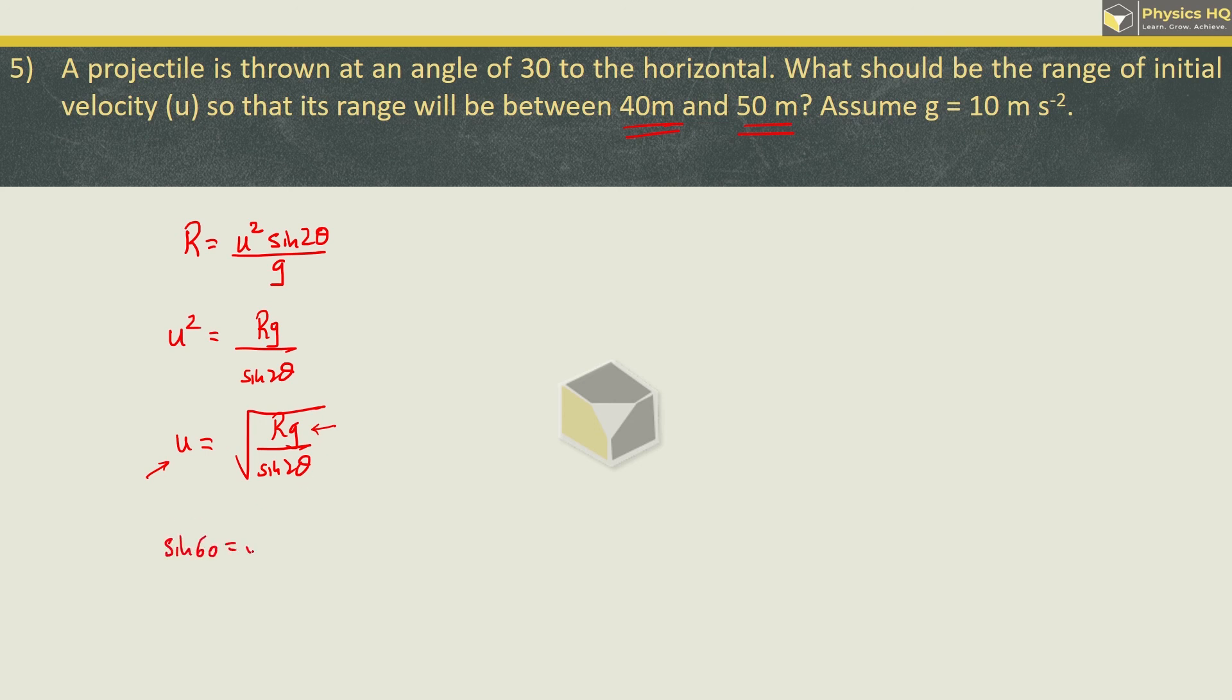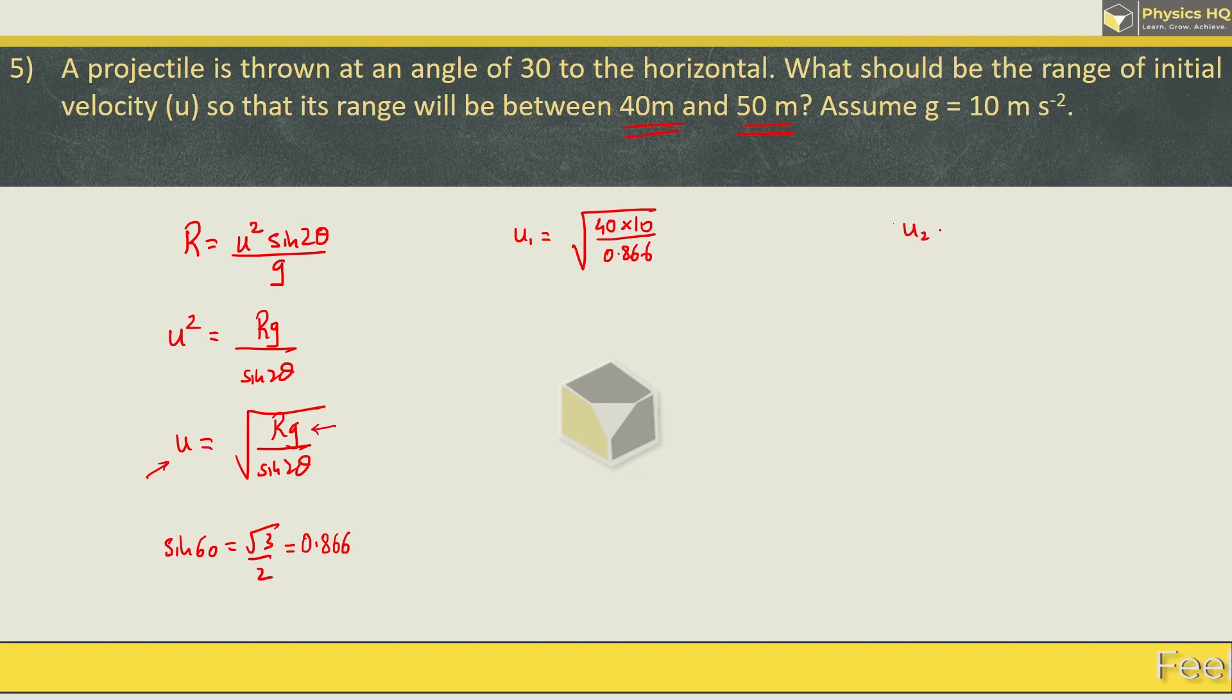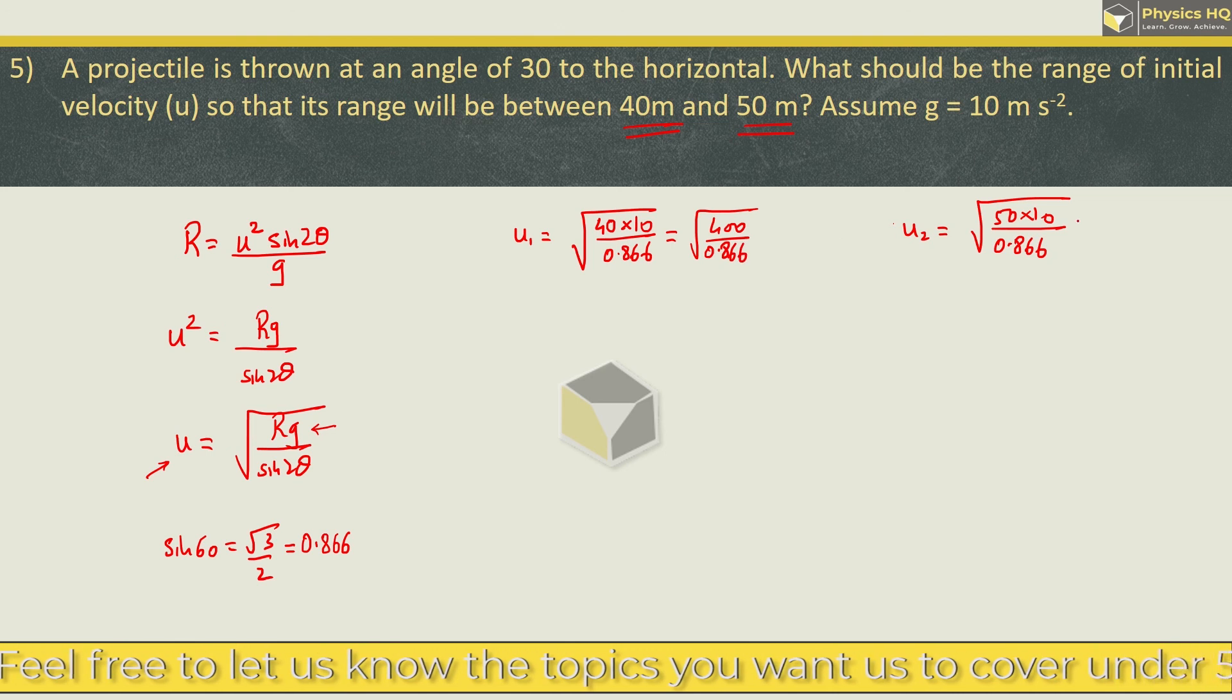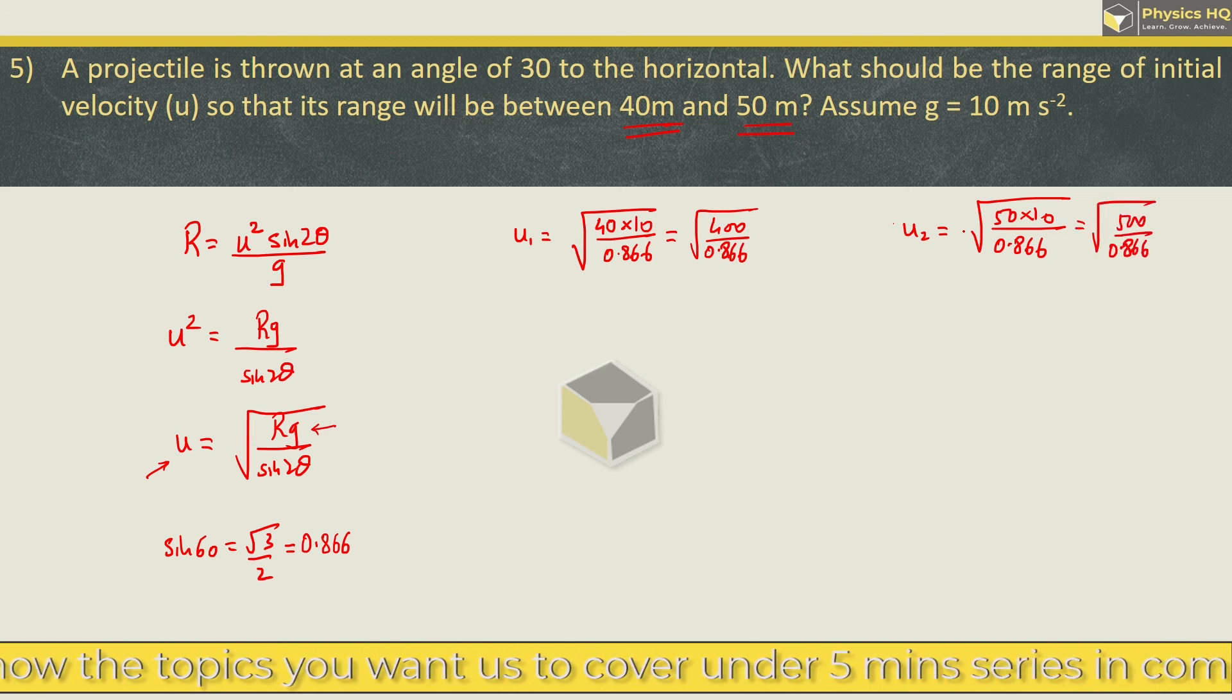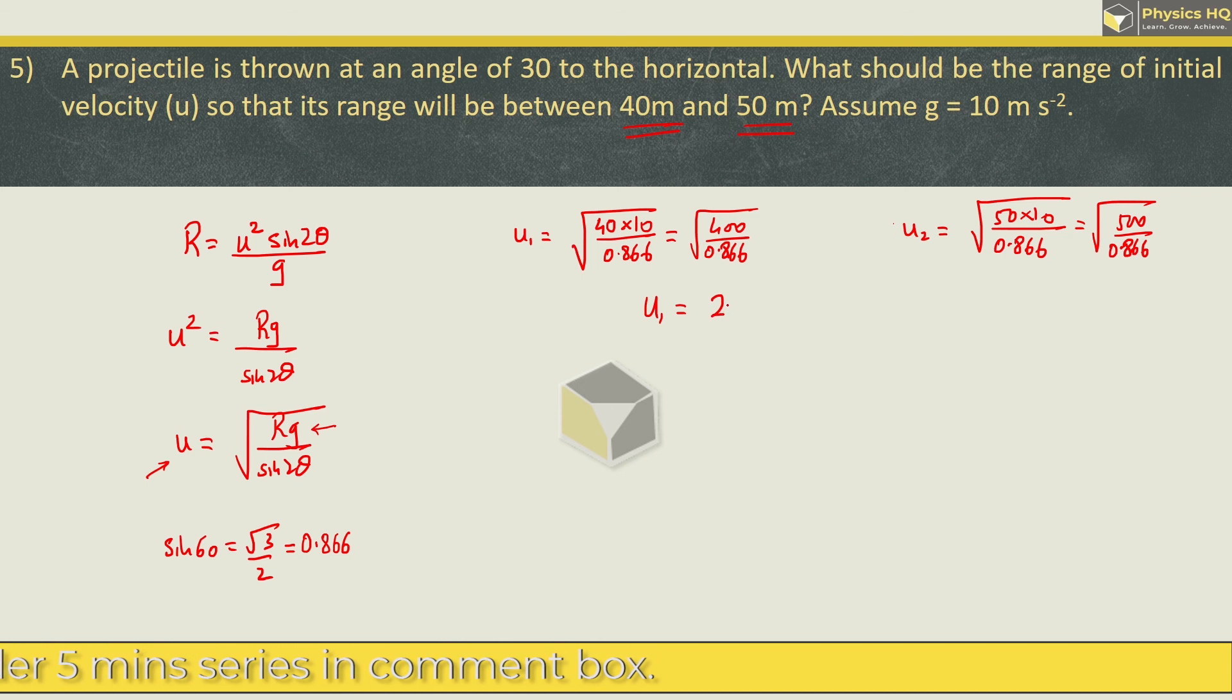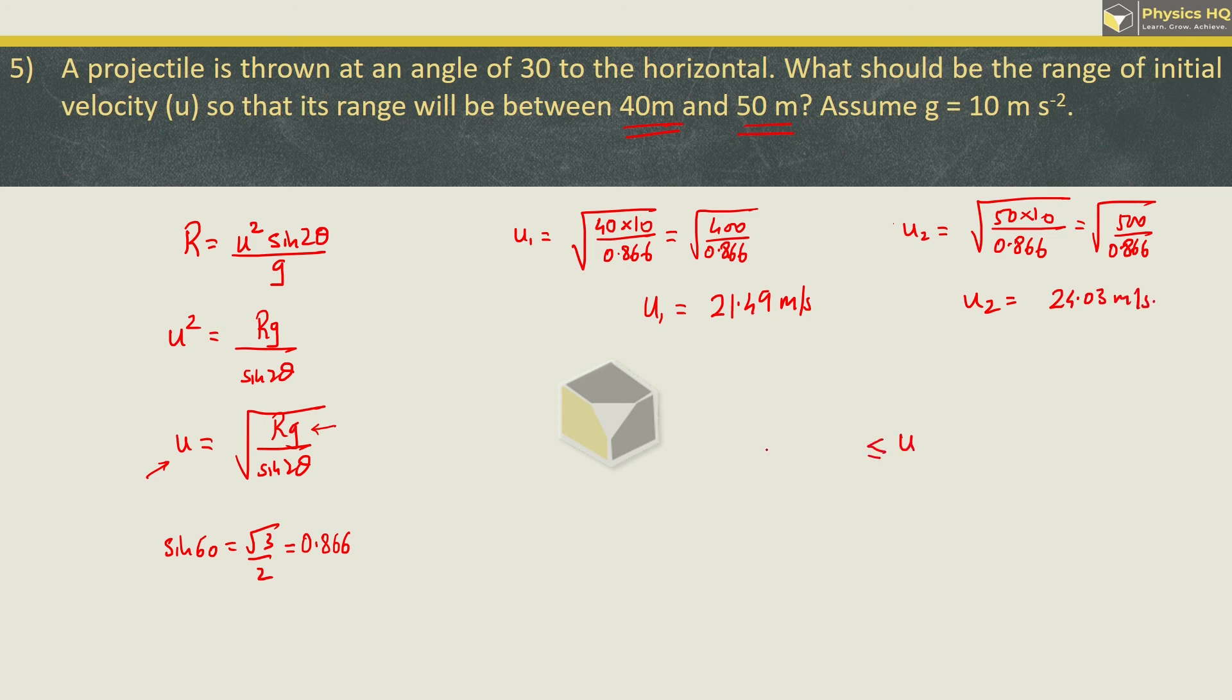The first velocity is square root of 40 times 10 divided by 0.866, and upper limit velocity is square root of 50 times 10 divided by 0.866. This is 400 by 0.866, and this is 500 by 0.866. We need to use log to solve this. When you solve the first one, you will get 21.49 meter per second, and the second one gives 24.03 meter per second. So the range of initial velocities is 21.49 to 24.03 meter per second.